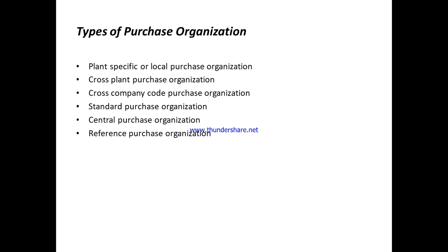Now we will see purchase organization types. We have different types: plant specific or local purchasing, then cross plant purchasing, cross company code purchasing, standard purchasing, general purchasing, and reference purchasing.